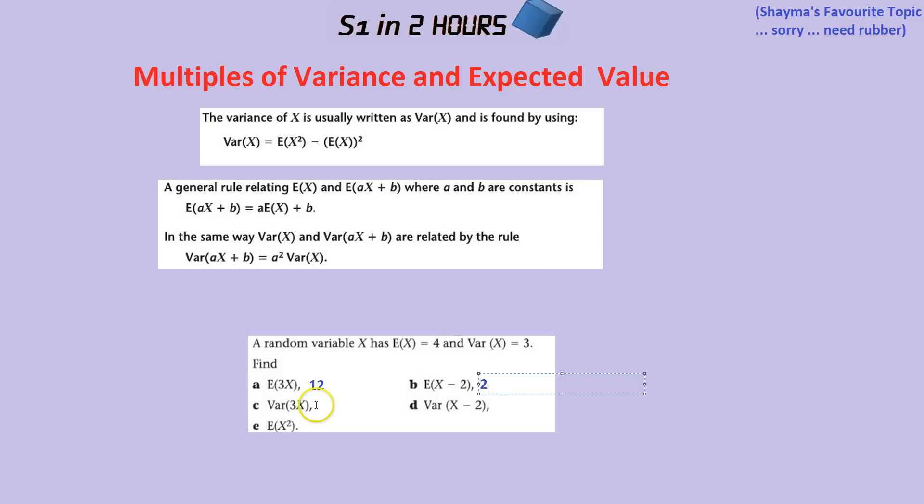The variance is a bit different. If there's a multiple of variance inside the brackets, then you need to square that and then times the variance by that. So here the value of X is times by 3. So that means we actually need to times our variance by 9, 3 squared, not just by 3. So if our variance is 3 up here, we would times this by 9. 3 times 9 is 27.